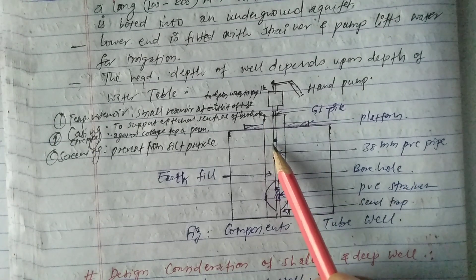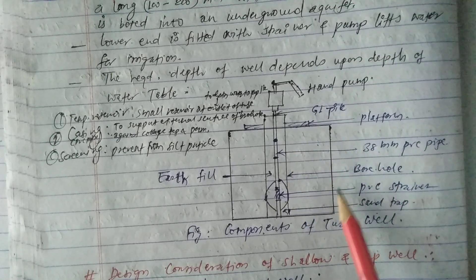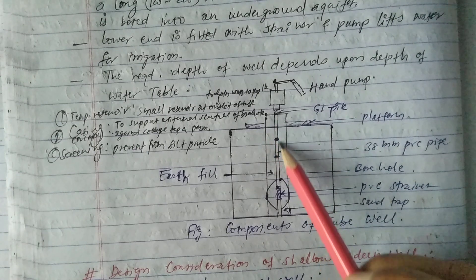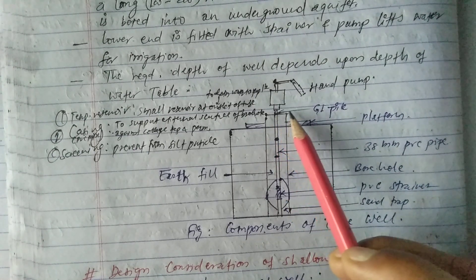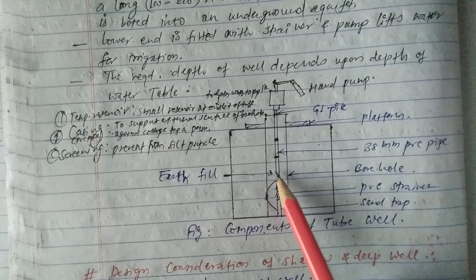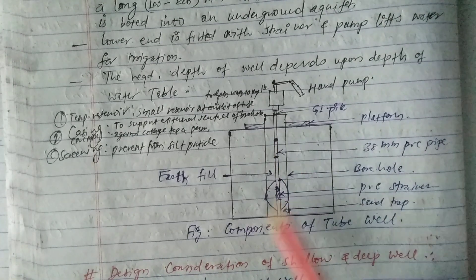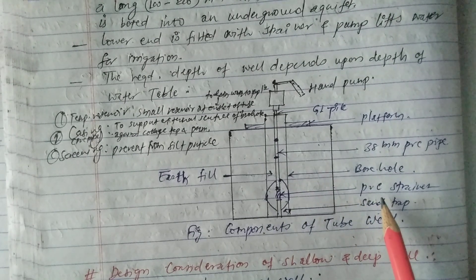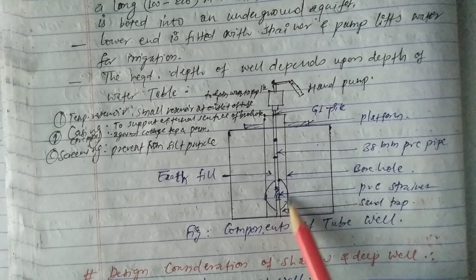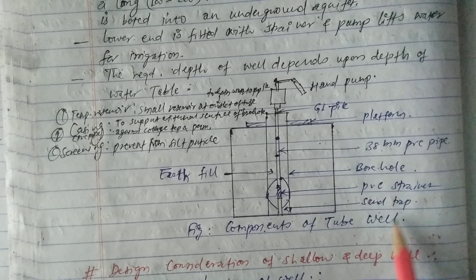In this tubule we use 38 mm PVC pipe. You can see the borehole — this is the borehole — and the PVC pipe inside it. In the upper layer this is the GI pipe and this is the platform. Besides the pipe there is an earth fill. In the lower portion of the tubule we provide a PVC strainer.